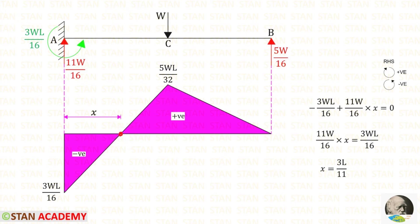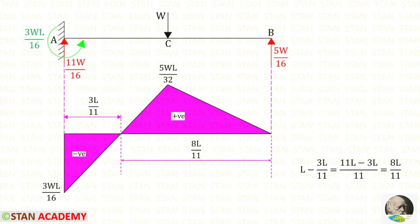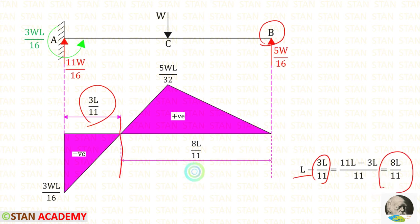At a certain point the bending moment becomes 0 — this is the point of contraflexure. Making a section at distance x, since the moment is 0, MA is anti-clockwise (negative) and RA is clockwise (positive) with distance x. Finally for x we get 3L upon 11. To calculate the distance of the point of contraflexure from the right side, we subtract 3L/11 from L, giving 8L upon 11.